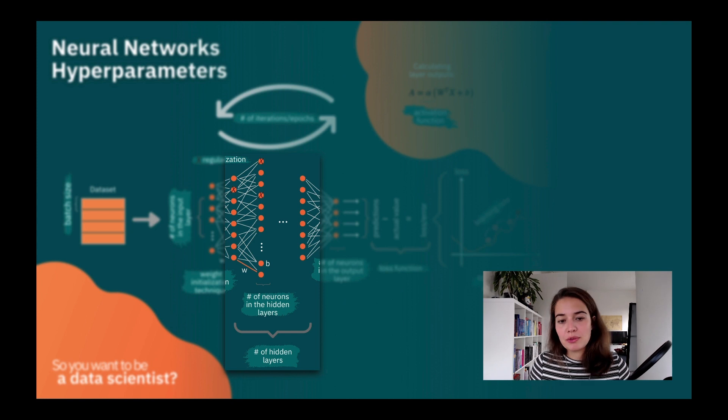Another group of layers that we have is the hidden layers. So for hidden layers, there are two things that you need to decide. You need to decide how many hidden layers you want, and you need to decide how many neurons on each of these hidden layers that you want. So that's something that you also need to set.